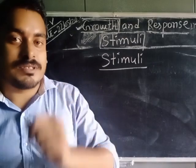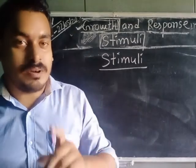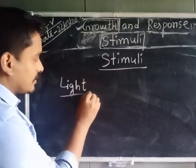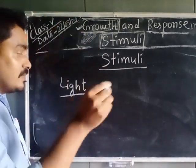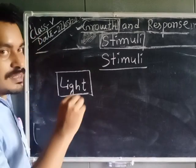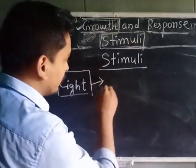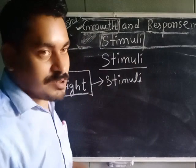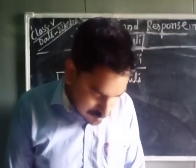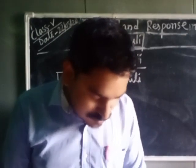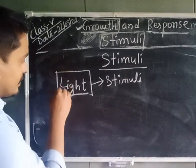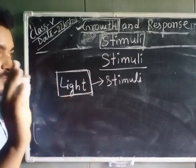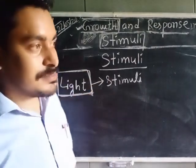That means you are responding. Light is falling into your eyes and you are responding. So the light is called stimuli. If you open your page number six, you will find the definition: something which causes a response. You see here the light causes the response. What was your response? You close your eyes. So light is the stimuli here.